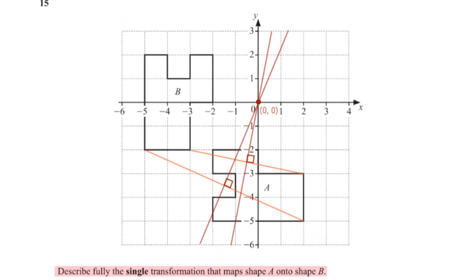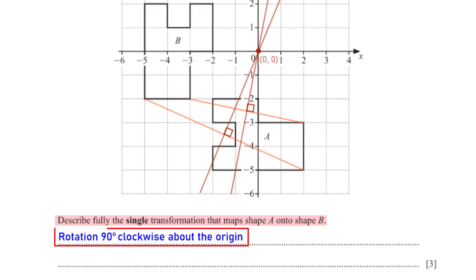Describe fully the single transformation that maps shape A onto shape B. Looking at shape A and its image shape B, this is a rotation 90 degrees clockwise. To find the centre of rotation, we connect corresponding points on both shapes and draw the perpendicular bisectors; their intersection is the origin. So the transformation is a rotation of 90 degrees clockwise about the origin.